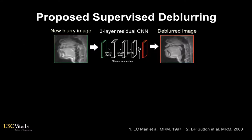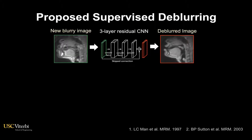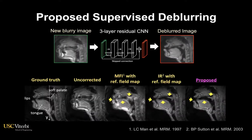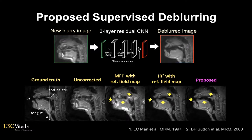In this work, we developed a supervised learning method that utilizes a three-layer residual CNN architecture, which is extremely fast and does not rely on explicit knowledge of the blur. We found that the proposed method works pretty well to resolve this imaging artifact with comparable results to the traditional method.